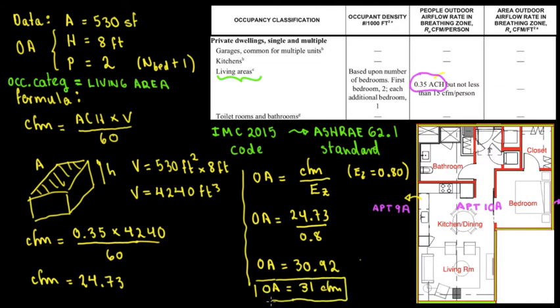All right. So in other words, in order to comply with code IMC 2015 or 18 or 13 or to comply with the code, you need to provide to this living space area with an outside air of 31 CFM, at least. In other words, when you are providing your strategy to comply with this code, you will need to provide more than this.